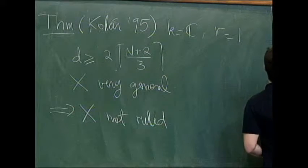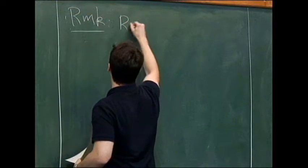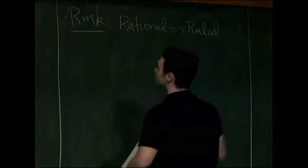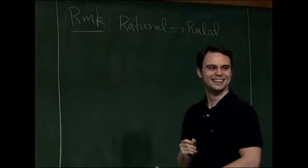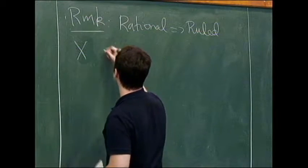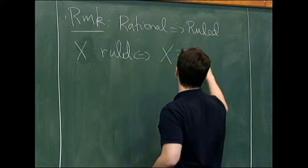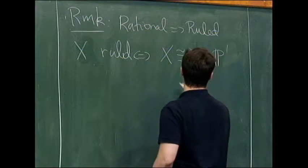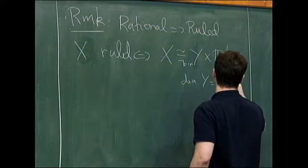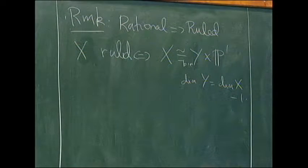So not rational, recall that rational implies ruled. So ruled means, so let me, just to be clear, everybody on the same page, X ruled means that X is birational to Y cross P1, where the dimension of Y is one less than the dimension of X.